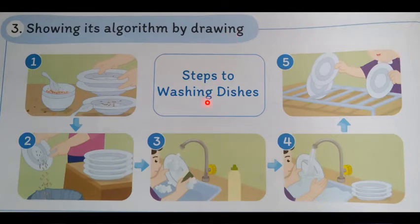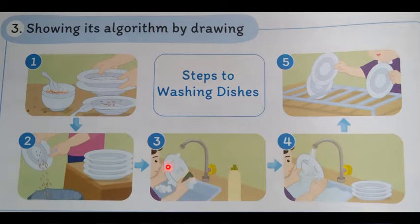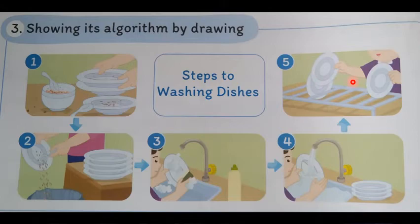In this one we're washing the dishes. We get the dishes, we put the old food in the bin, we wash it under the tap with soap, then we rinse them — that's getting all the soap off them with some more water — and then we put them to dry.